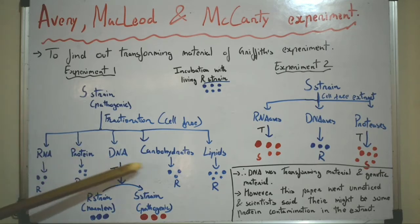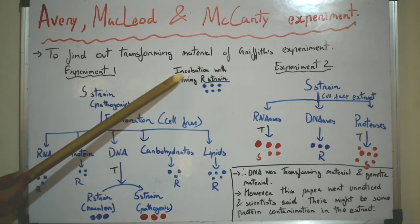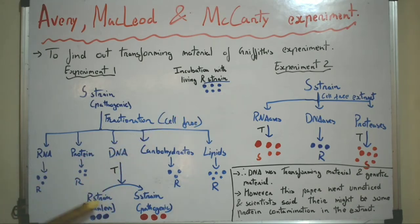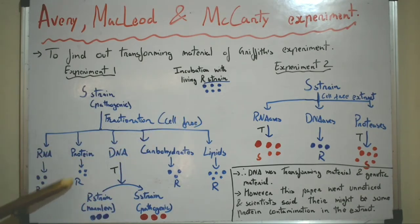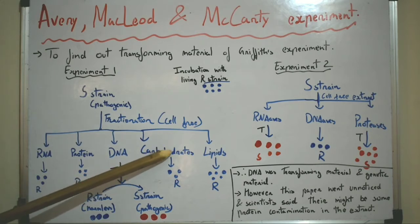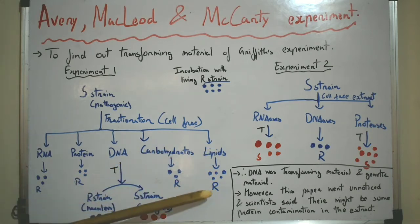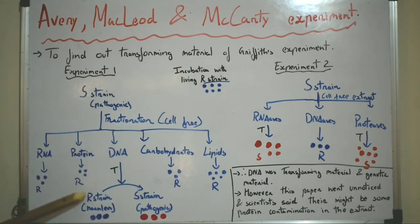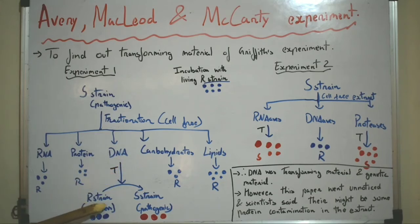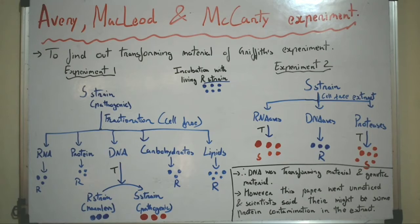After isolation of these constituents, what they did was they incubated each with the living R-strain, or the harmless strain. Now, as you can see in the figure, neither RNA, nor protein, nor carbohydrates, nor lipids were able to transform this R-strain into S-strain.